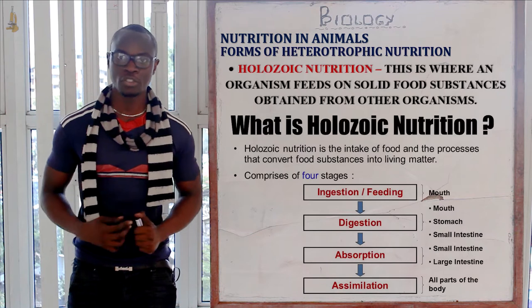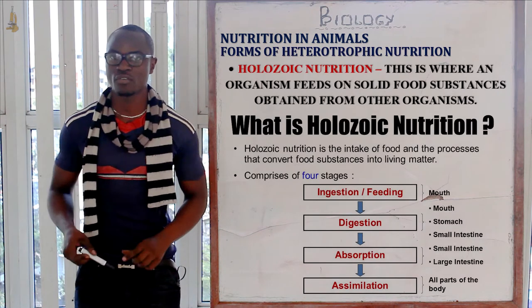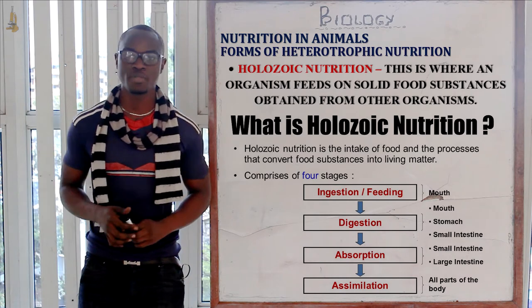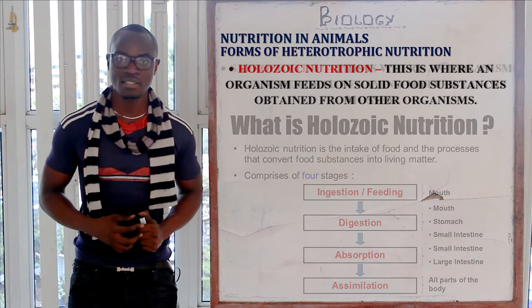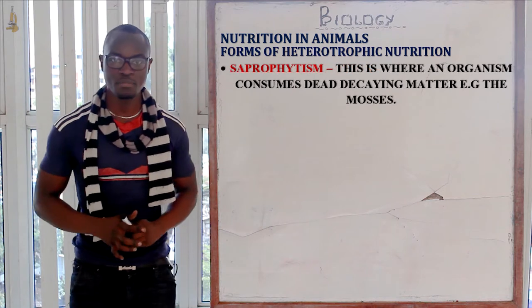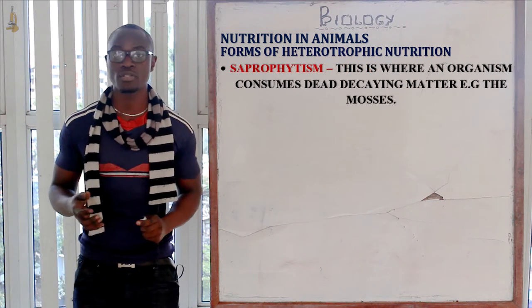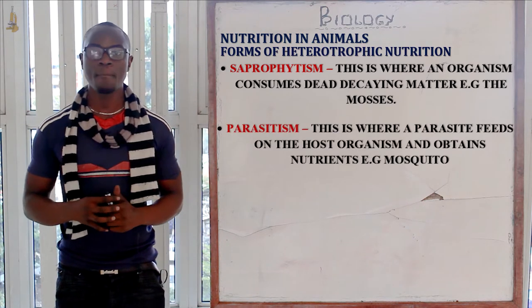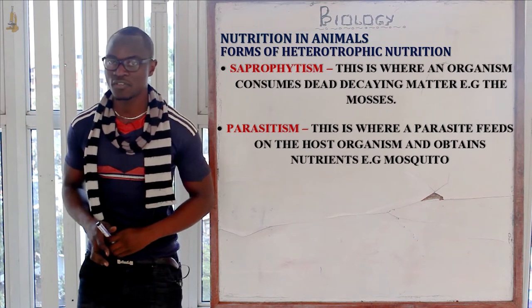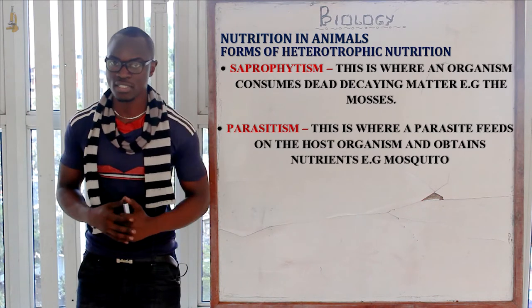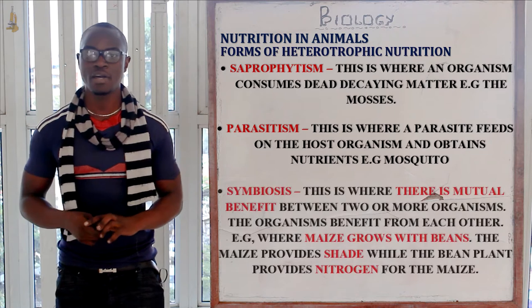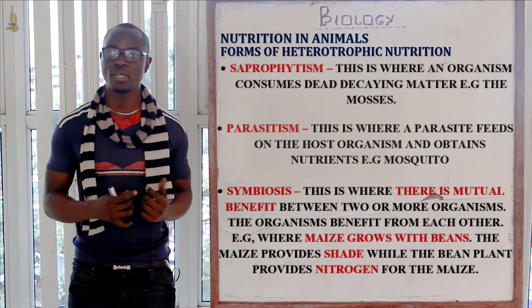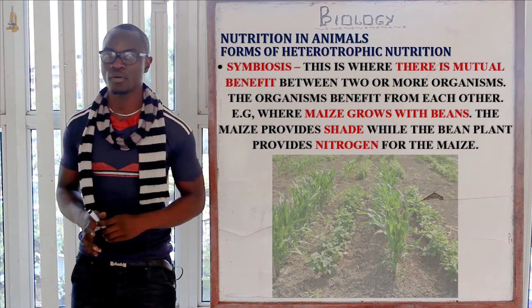The types of heterotrophic nutrition we have: first, holozoic nutrition, which mainly means consuming solid food substances from other organisms. Then we have saprophytism, which is mainly consuming dead decaying matter. Then we have parasitism, whereby an organism called the parasite feeds on the host and draws nutrients from it. Finally, we have symbiosis, which means two or more organisms benefit from each other by obtaining nutrients from each other.